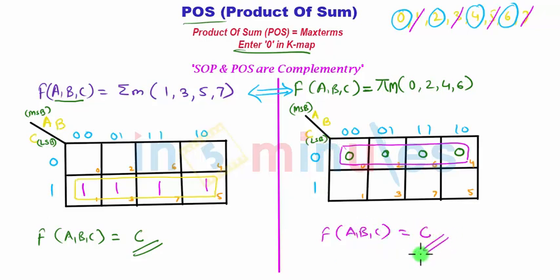Hence SOP and POS form can be easily obtained from each other by replacing or complementing the bits present in one form. Or you may say that whatever combinations are present in SOP form, the bits which are absent in SOP form will be present in POS form. So SOP and POS form are complementary to each other. Thank you.